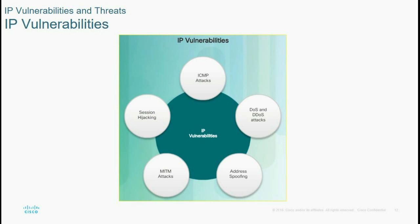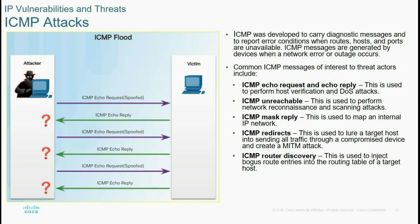IP vulnerabilities include denial of service, ICMP attacks, session hijacking, and man-in-the-middle attacks. For example, ICMP attacks: ICMP was developed to carry diagnostic messages to report error conditions when routes, hosts, or paths are unavailable. ICMP messages are generated by a device when a network error or outage occurs.